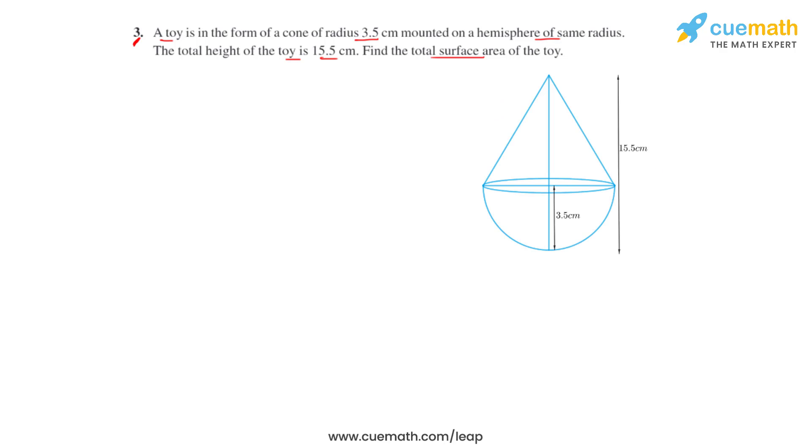So let's first draw how the toy would look like. This is how the toy will be, wherein we see that we have a cone which is mounted on a hemisphere and they both have got the same radius. The radius for both, that is for cone and the hemisphere, is 3.5 centimeters.